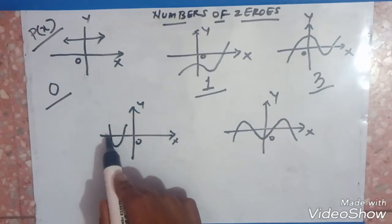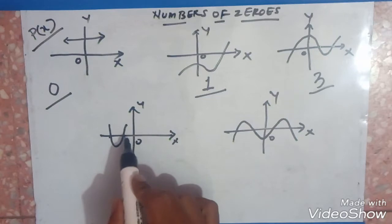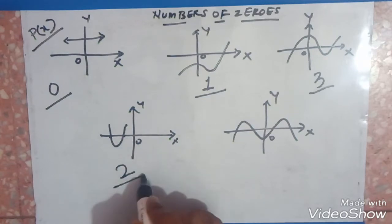In the fourth graph, number 1, number 2. So there are 2 intersections with the x-axis. The number of zeros are 2.